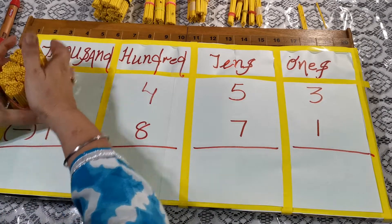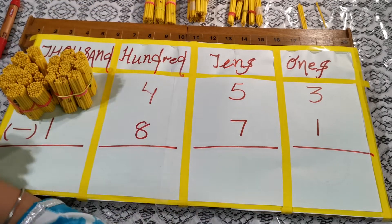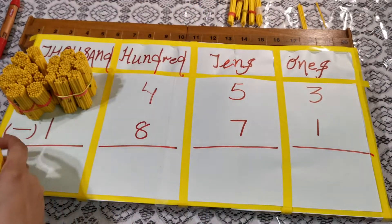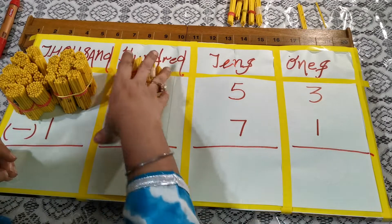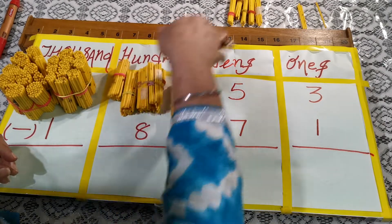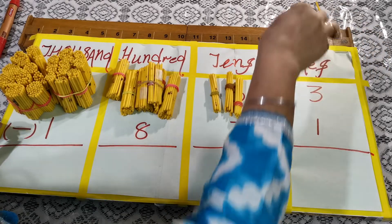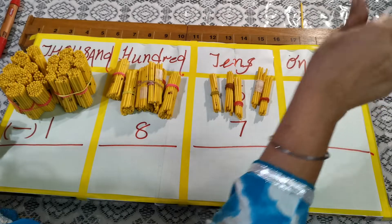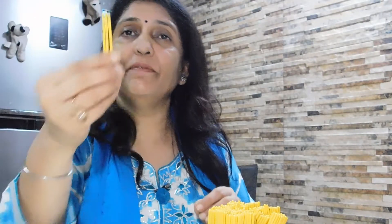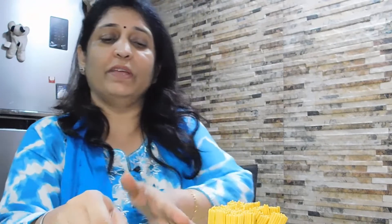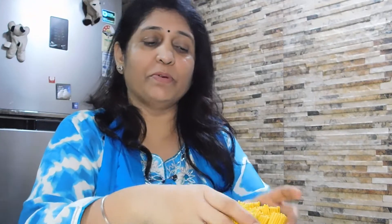I am going to place these jodo sticks on my minuend, which is 2453. First, I will place two bundles of 1000. Then four sticks of hundreds. Then five sticks of tens. And three sticks of ones. A bundle of 10 ones becomes a tens bundle, 10 bundles of tens becomes 100, and 10 bundles of 100 gives us 1000.